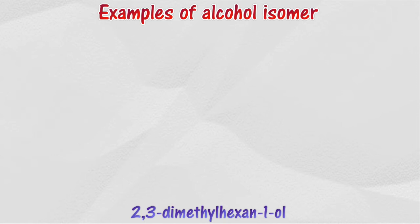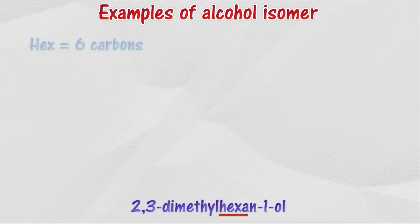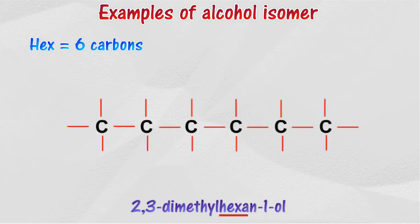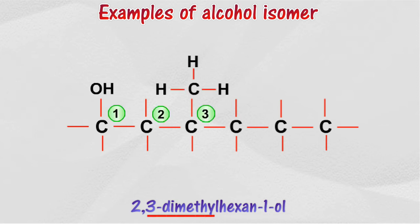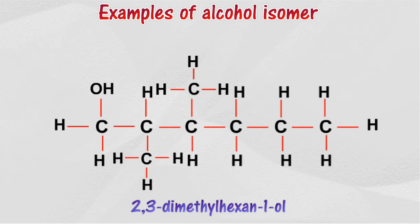Here is an example of an alcohol isomer. There are six carbon atoms in the longest chain, so it is called hexanol. The OH group is positioned at the first carbon, so it is called hexan-1-ol. Two methyl groups are positioned at the second and third carbon atoms, hence it is called 2,3-dimethylhexan-1-ol. Thank you for watching.